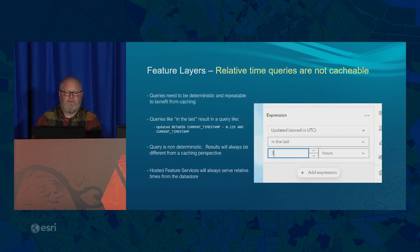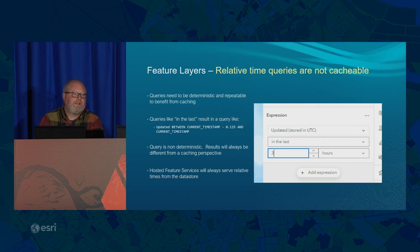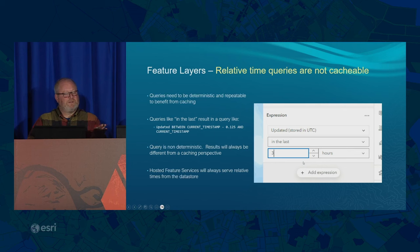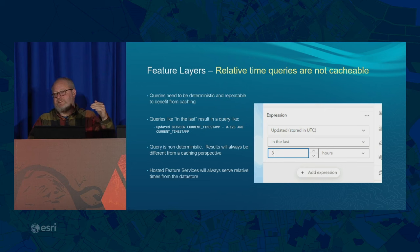Regarding relative time queries: you have to be very careful with those because they're not cacheable. We can't do caching because a relative time query is always changing. Anytime you have a current timestamp — like 'updated in the last three hours' — that time is always changing, so the answer is always different. Since it's non-deterministic, you can't leverage any of the caching, so you'll always go back to the database and it will be slower.